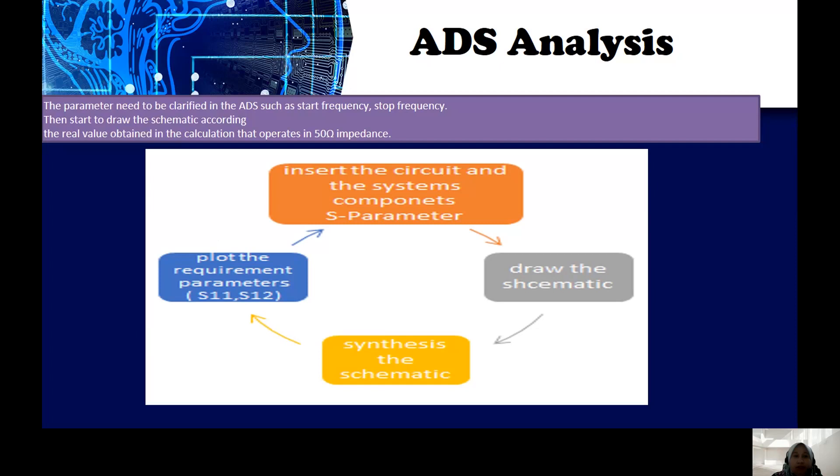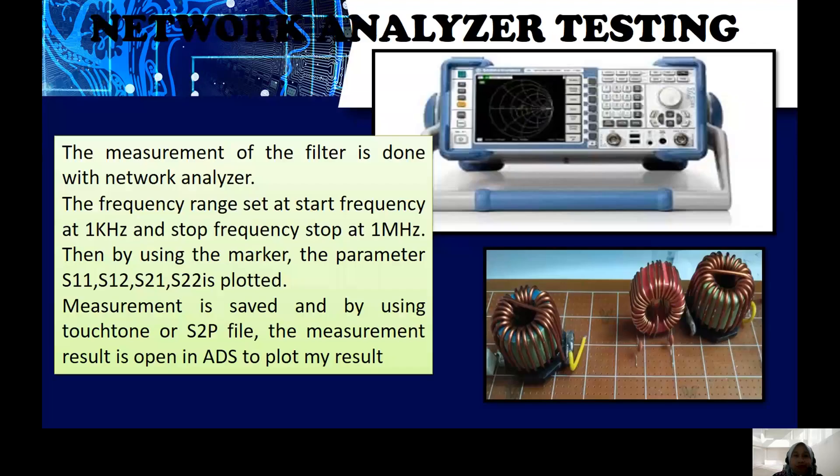The parameter that needs to be clarified in the ADS is the start frequency and stop frequency. By using the lump elements and lump components, which is the real components of inductor and capacitor, we use the network analyzer to see the response of the fifth order Chebyshev low-pass filter and the frequency range set at the start frequency 1 kilohertz and stop frequency at 1 megahertz.